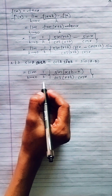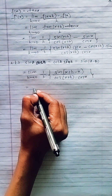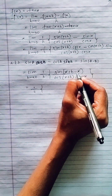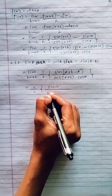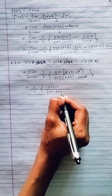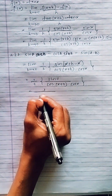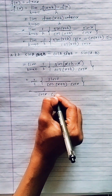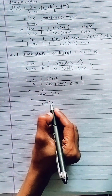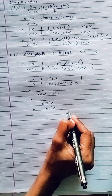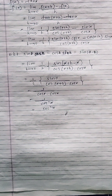Applying the limit as h tends to 0: sin(h)/h tends to 1 by the standard limit. The denominator becomes cos(x+0) into cos(x) = cos x into cos x = cos²x. So f'(x) = 1/cos²x = sec²x. Therefore the derivative of f(x) = tan x using first principle is sec²x.